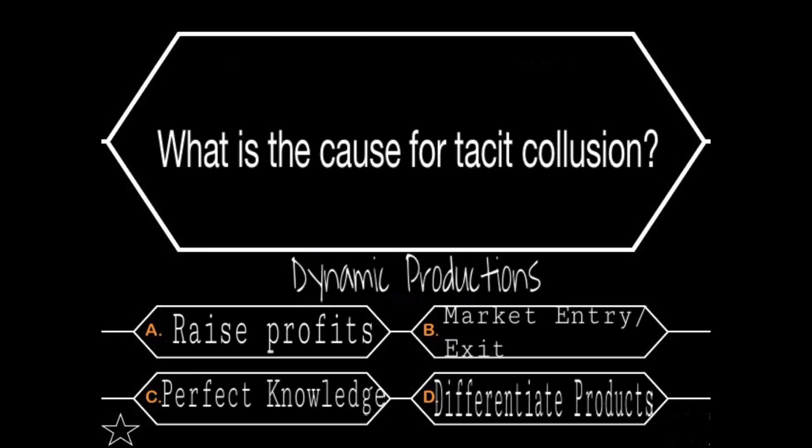What is the cause for tacit collusion? A, raise profits; B, create free entry and exit into the market; C, gain perfect knowledge; or D, differentiate products. Well, the whole purpose of colluding is to raise profits, right? By either limiting production or increasing prices.